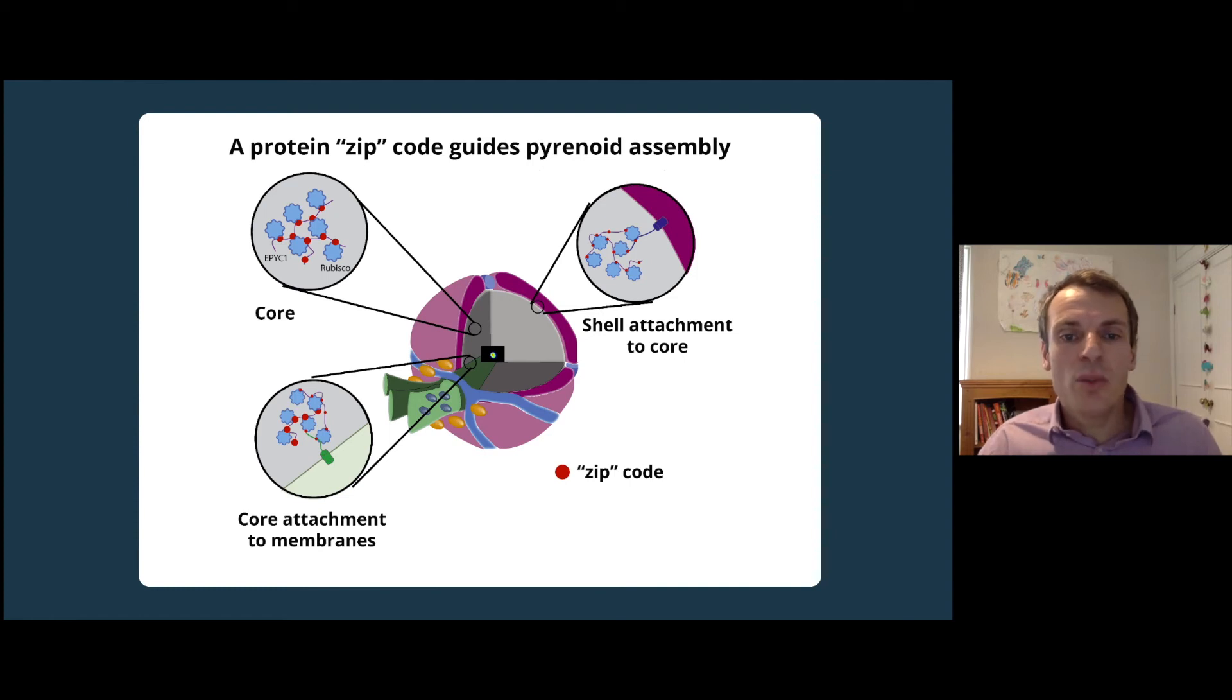By adding the zip code to proteins that aren't usually found in the pyrenoid, we could relocate them to the pyrenoid. And by removing the zip code from proteins that are usually found in the pyrenoid, we could prevent them from localizing to the pyrenoid.